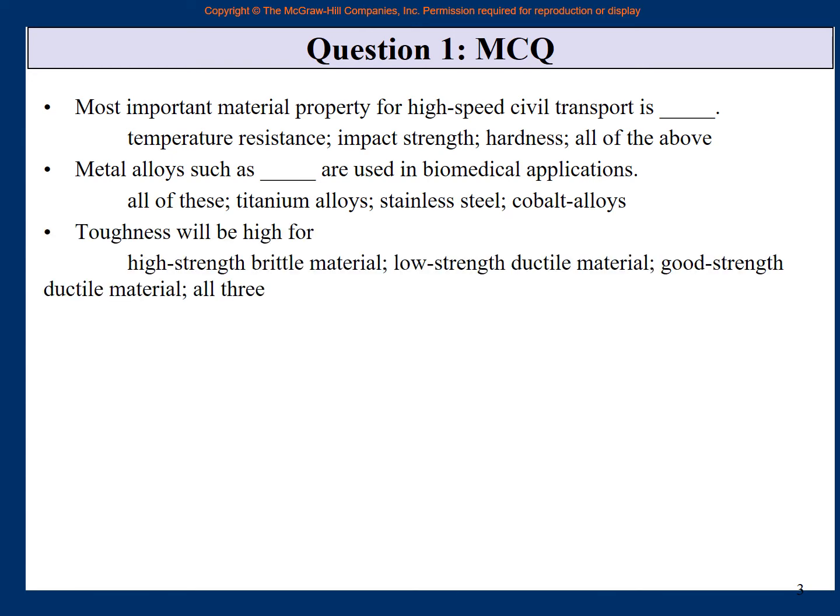Toughness will be high for which one? High strength, brittle material? Low strength, ductile material? Good strength, ductile material? All three? See, high strength, brittle material. Strength is high, but it is brittle, so the ductility is very small. So the area under the curve is small. Low strength, ductile material? Strength is low, so the height of the curve is small. Ductility is good, the area under the curve is still small. Good strength, ductile material? The strength is high, so the vertical side is high, and the ductility is also high. So the area would be largest under this one. Good strength, ductile material. So toughness will be high because toughness is the area under the stress-strain curve.